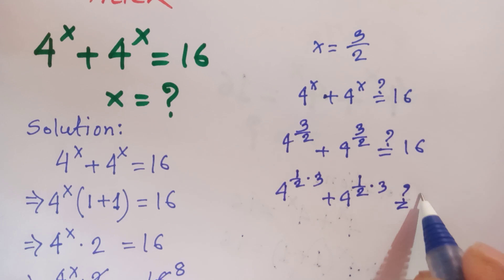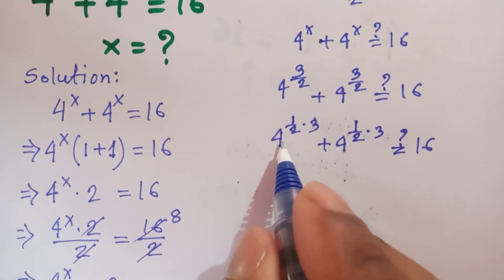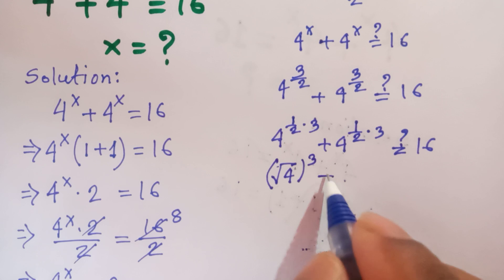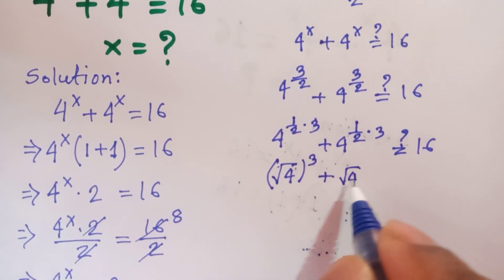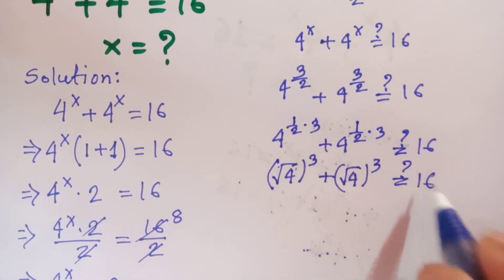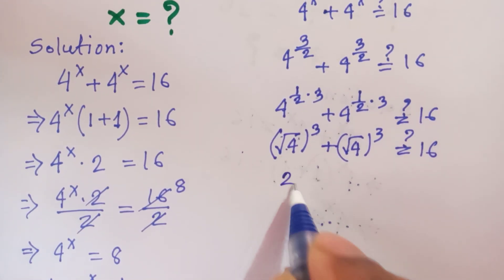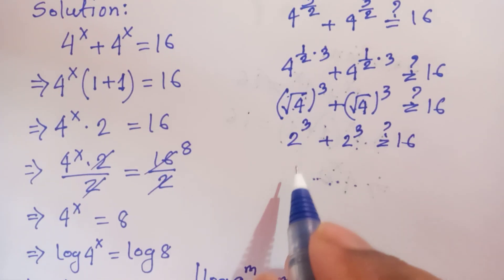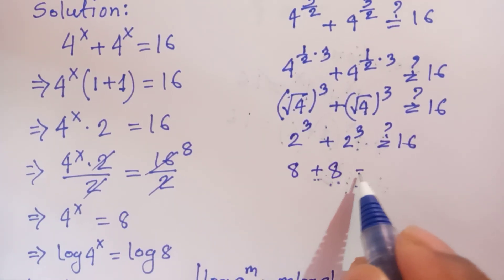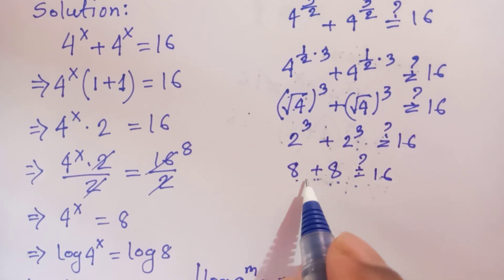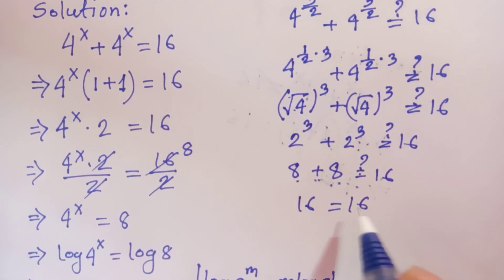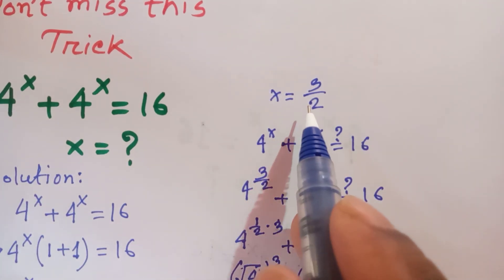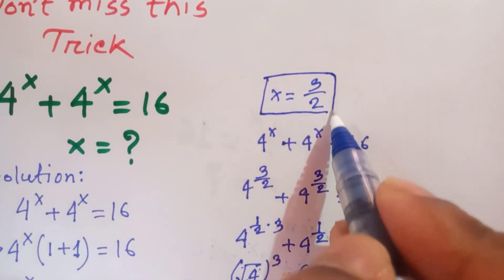So 4 to the (1 over 2) means root of 4 raised to the power 3, plus root of 4 raised to the power 3, which should equal 16. Root of 4 is 2, so this becomes 2 cubed plus 2 cubed, which is 8 plus 8, which equals 16. So left side equals right side, confirming the value of x is equal to 3 over 2. Thanks for watching, please subscribe to my channel for more videos. Bye bye.